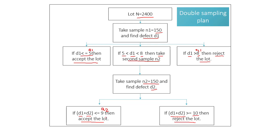After taking the second sample, there is no other possibility than accepting or rejecting the lot. We can definitely conclude whether to accept or reject, because there is no integer value possible between 9 and 10. In that way, we can draw a double sampling plan and conclude whether the lot needs to be accepted or rejected. Double sampling plan is very useful. If you have any doubts, you can ask in the comment section. Have a nice day.